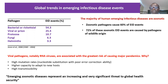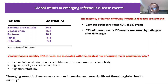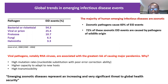SARS-CoV-2 is highly transmissible. At the molecular level, its receptor binding domain is even more transmissible than SARS-CoV-1 — in addition to binding ACE2, it has the capability to bind integrins on cells, giving it stronger binding affinity. This makes it highly transmissible. Emerging zoonotic diseases represent an increasing and very significant threat to global health security.